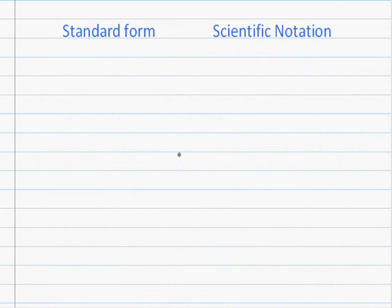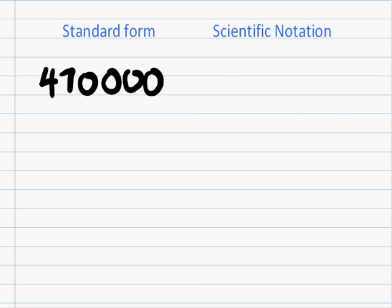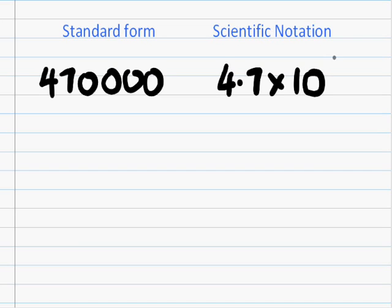Standard form and scientific notation are two ways of writing exactly the same number. An example of this is a number like 470,000. This number can also be written in scientific notation as 4.7 times 10 to the 5.